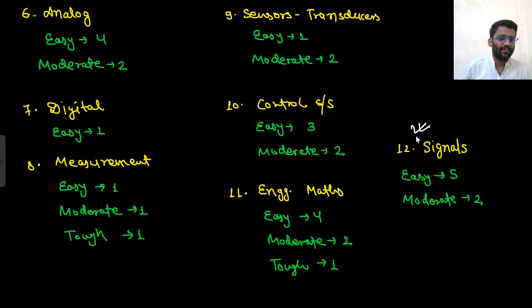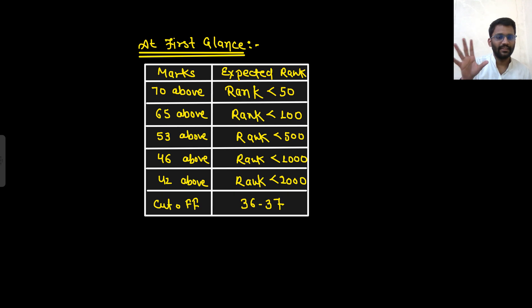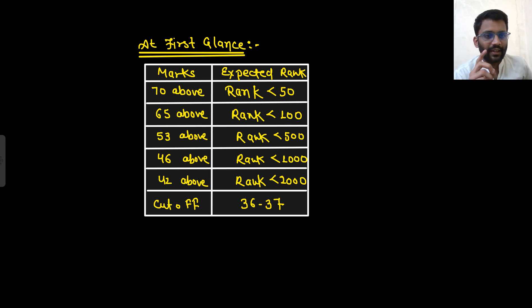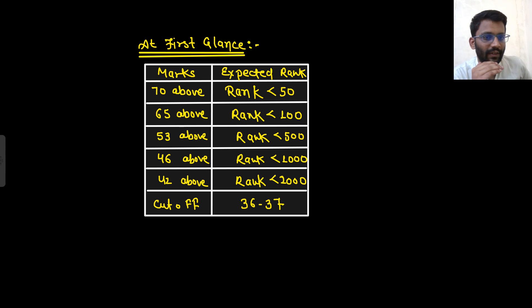Based on that, here is the marks versus expected rank analysis. Note this is the first revision — once the rank predictor is released I will make another update. At first glance: if you are getting around 70, you can expect a rank under 50; around 65 gives a rank under 100; 53 or 54 above gives a rank under 500; 46 above gives a rank under 1000; and 42 above gives a rank under 2000.